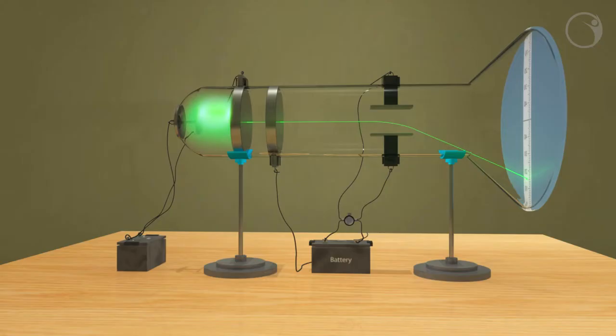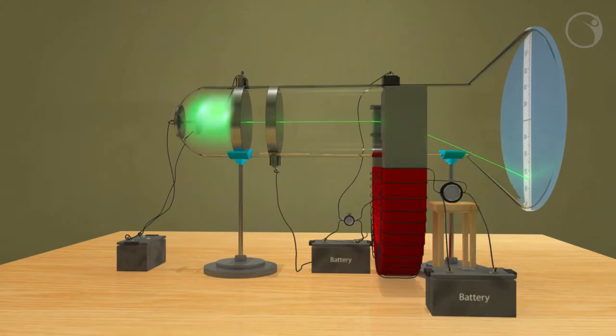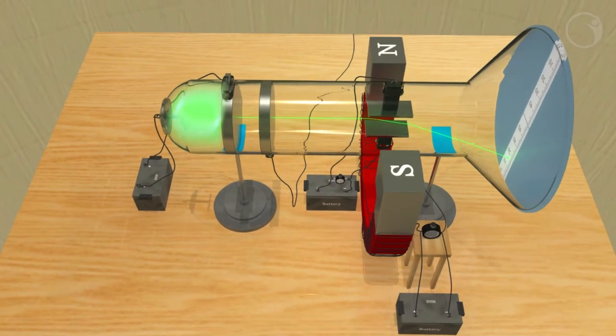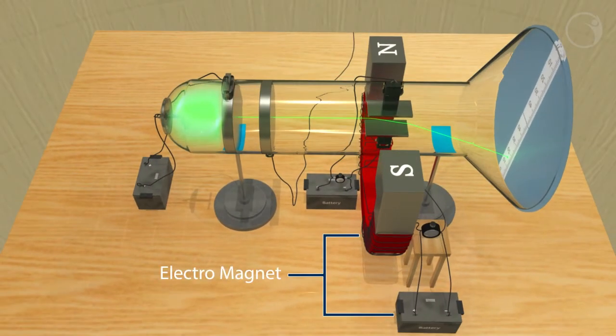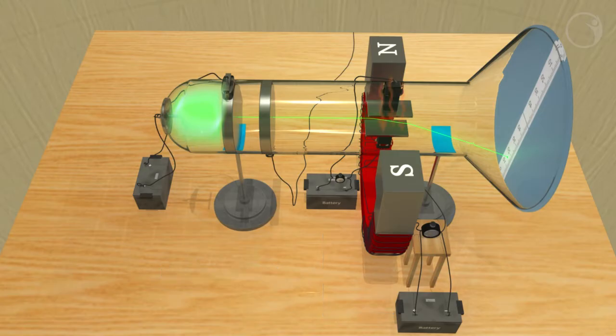Thompson's experiment. We create a uniform magnetic field using an electromagnet perpendicular to the electric field applied by the metal plates. The field of the magnet flows from north pole to south pole.